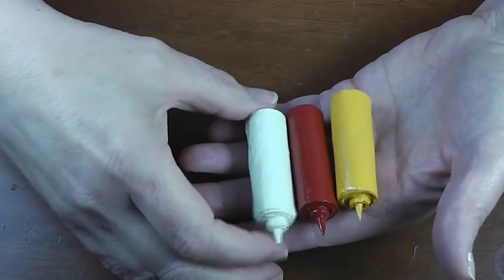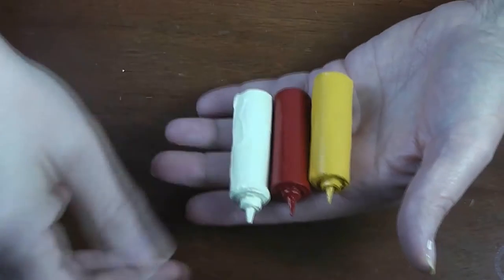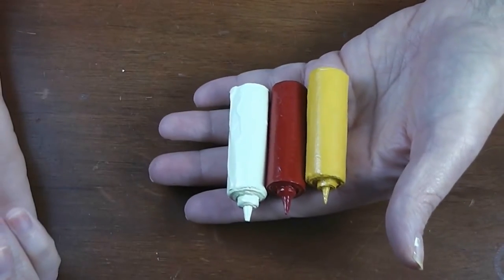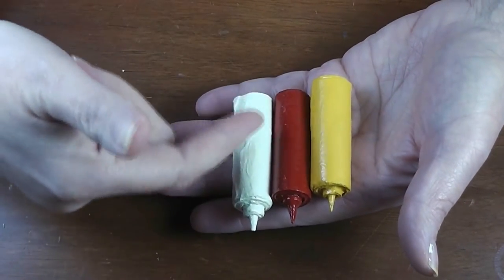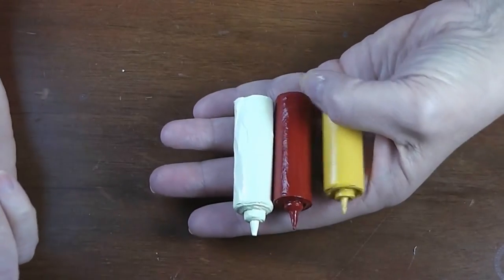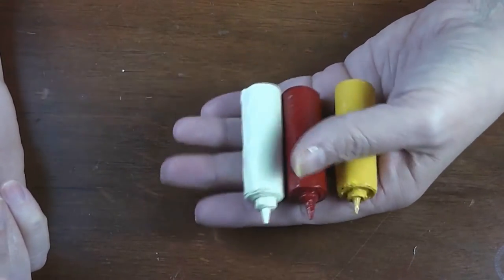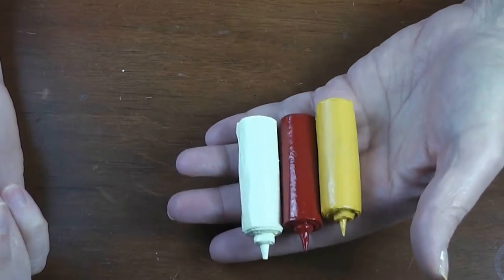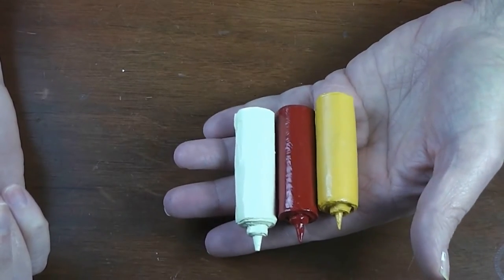All right, today we are continuing our journey to get the dolls those burgers and I thought, what are burgers without some toppings? So we're making some dispensers for mayonnaise, ketchup, and mustard for the dolls to use with those burgers. Stay tuned and see how really simple, inexpensive, and quick these are to make.